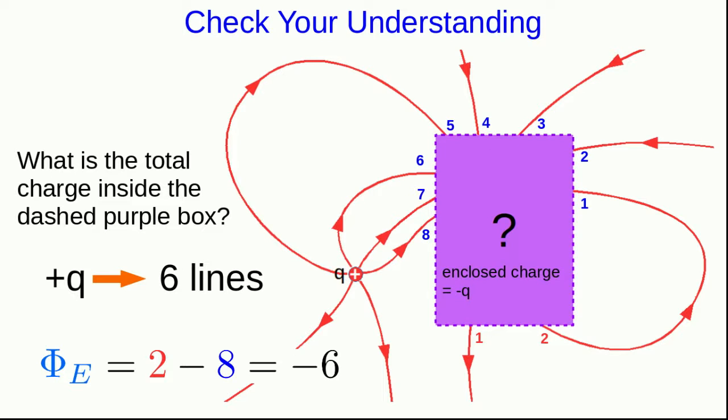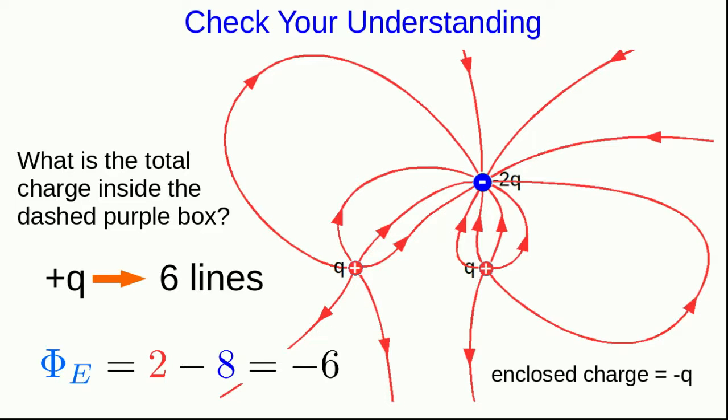It might be instructive to see how I put this diagram together. If I remove this surface that's hiding the amount of charge in there, you can see how I set it up. There's a negative 2q charge here and a positive q charge here. And so indeed, the total enclosed charge is negative q.